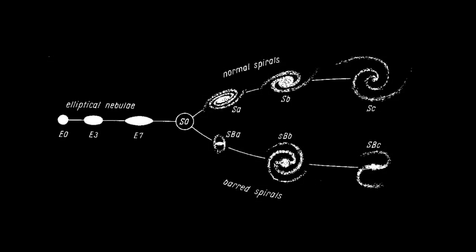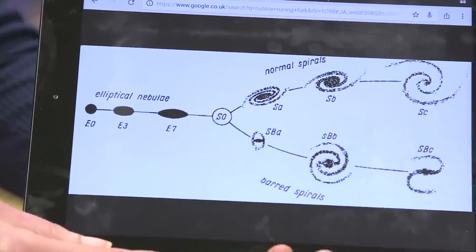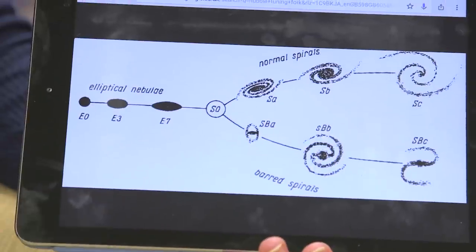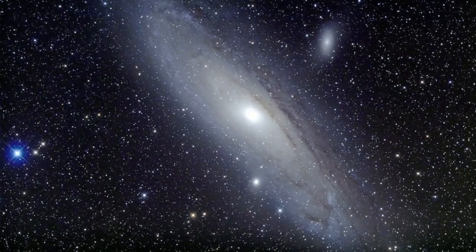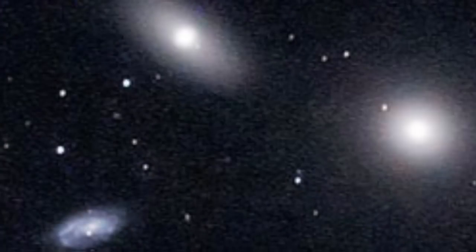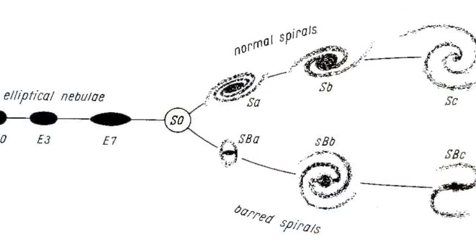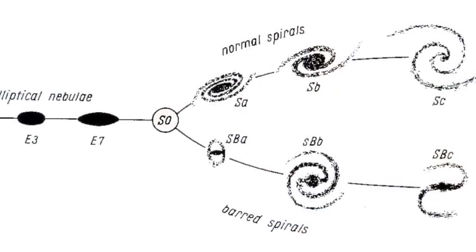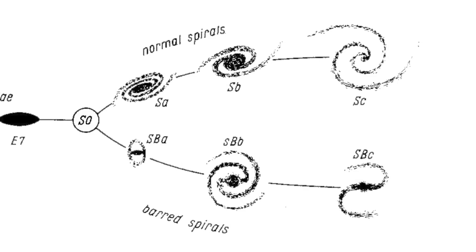This goes back to a very famous classification first devised by Edwin Hubble — we call it the Hubble Tuning Fork Diagram. This is a completely empirical way of classifying galaxies; Hubble took all the galaxies he could see and put them in a system according to what he thought they looked like. We've got the elliptical galaxies and then the beautiful spiral galaxies, going out in two branches — one branch has an extra feature that's a bar — and they get more loosely wound spiral arms and smaller bulges in the centre.